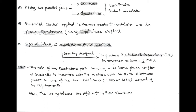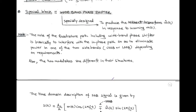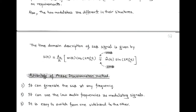In the phase discrimination method we use two modulators, both different in their structures. The output of the phase discriminator is the SSB modulated wave S(t), which equals (A_C/2)[m(t)·cos(2πf_c t) ∓ m̂(t)·sin(2πf_c t)], where the minus sign is for upper single sideband and the plus sign is for lower single sideband.